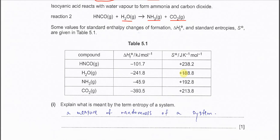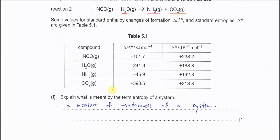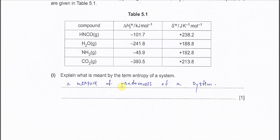Part 1: Explain what is meant by the term entropy of a system. Entropy is always the measure of the randomness of a system — how random a system is. This we call entropy.